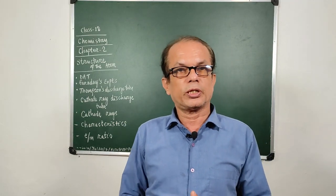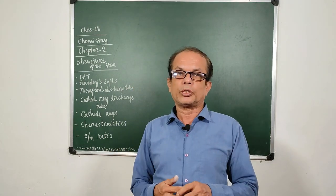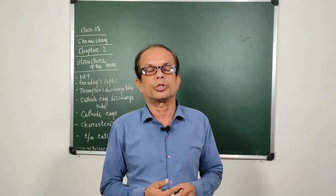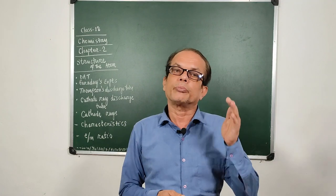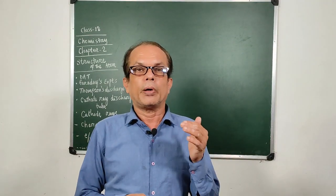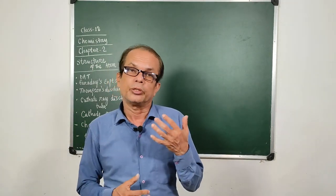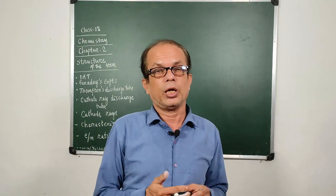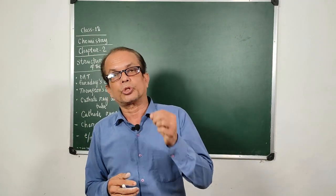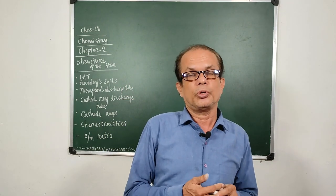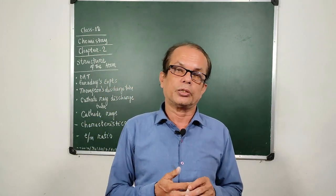Hi guys, welcome to my channel Subha Search Classes. Today we are going to start the new chapter after the completion of the first one — Structure of the Atom for Class 11. In this chapter we have to discuss starting from Dalton's atomic theory, Michael Faraday's experiment with electrochemistry, and Thompson's atom model and its failure, up through the cathode ray discharge tube experiment and the characteristics of cathode rays.